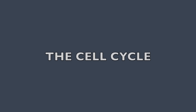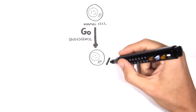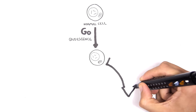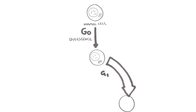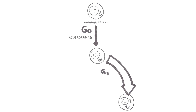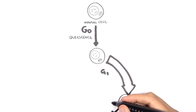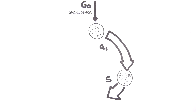The cell can then enter the cell cycle. The first phase of the cell cycle is known as the G1 phase, the growth phase. This is where the cell's organelles duplicate — here you can see the mitochondria of the cell are duplicated. After the G1 phase is the S phase, also known as the synthesis phase.